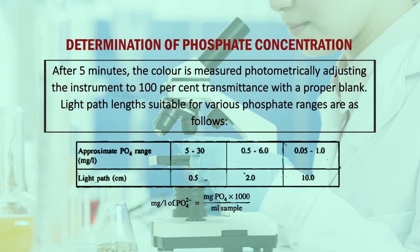Light path lengths suitable for various phosphate ranges are as follows: for an approximate phosphate range of 5 to 30, the light path is 0.5 cm; for a range of 0.5 to 6, the light path is 2 cm; and for a range of 0.05 to 1, the light path is 10 cm. Phosphate in mg per liter equals phosphate in mg multiplied by 1000, divided by the sample volume.